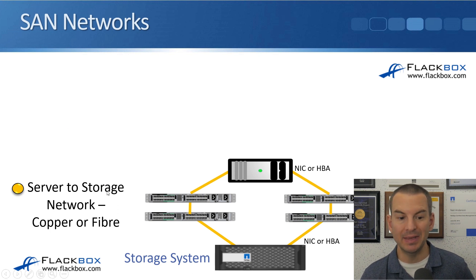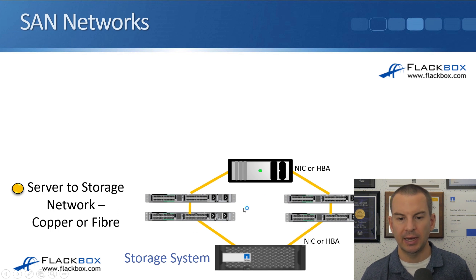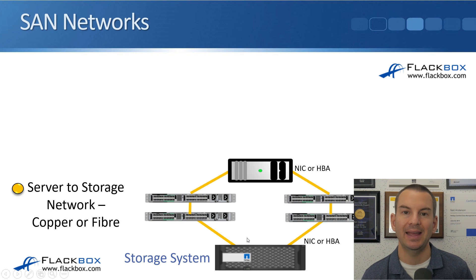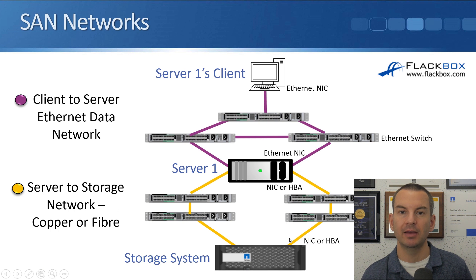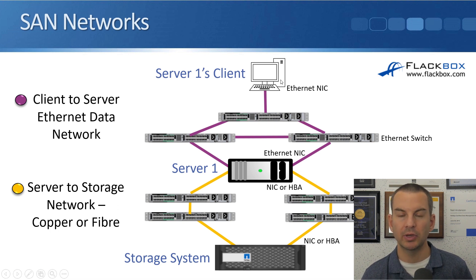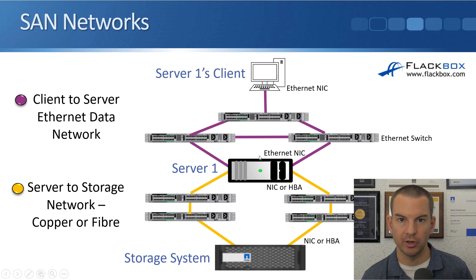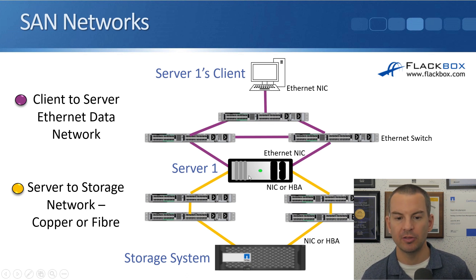The layer 1 media will be copper, like Ethernet, or fiber. For resiliency, we'll normally have redundant connections between the server and the storage system. When we put it together: here's you on your PC at your desk, you connect to the web server over the normal network infrastructure, and then to actually serve you the web pages, the web server gets that from its storage over the storage area network.